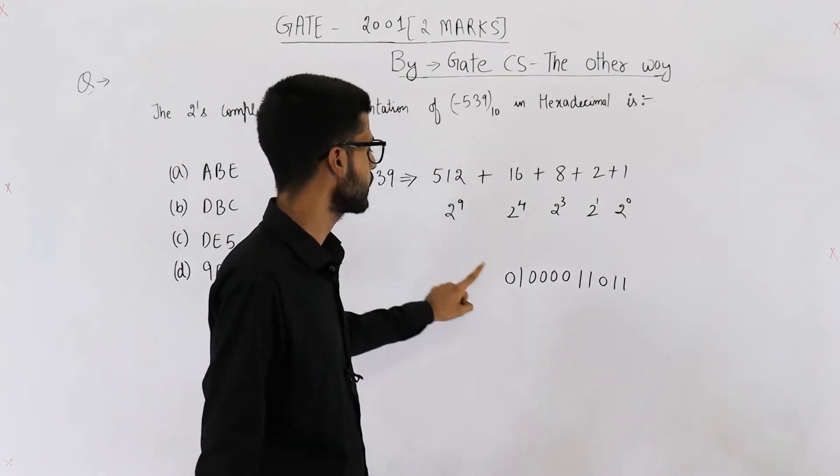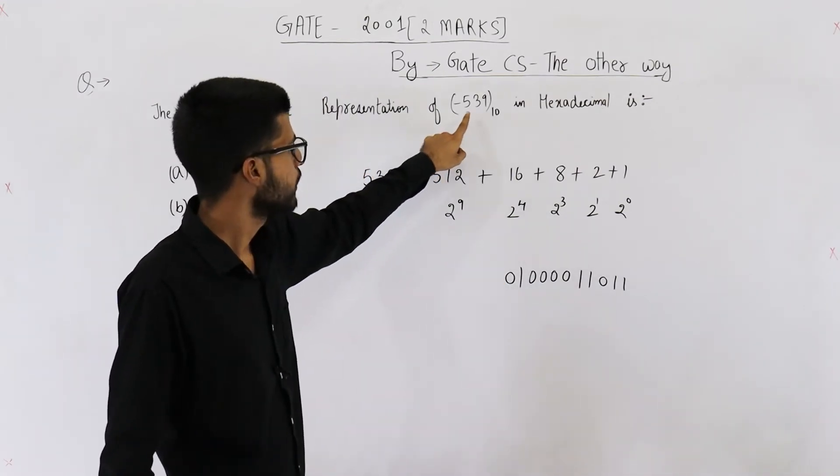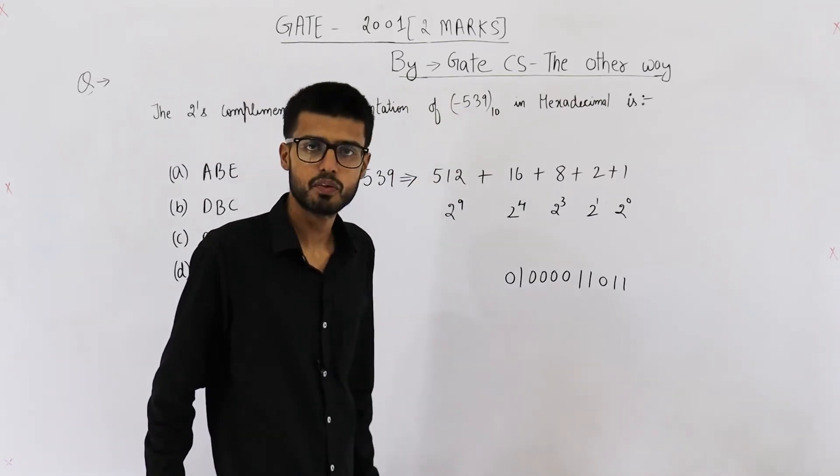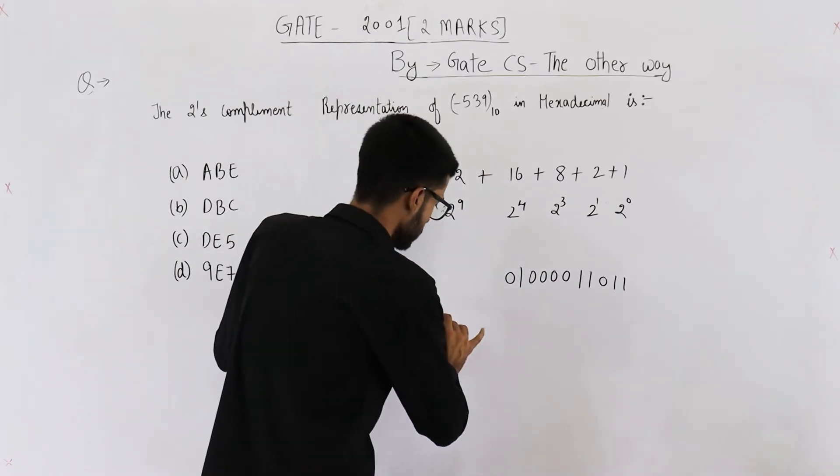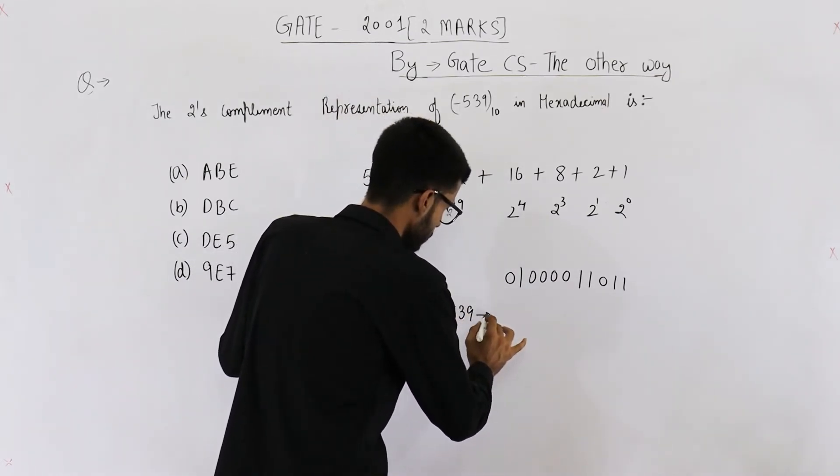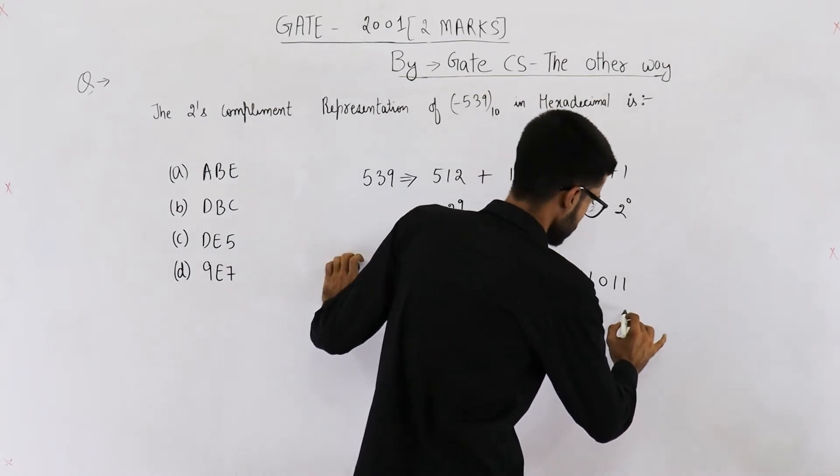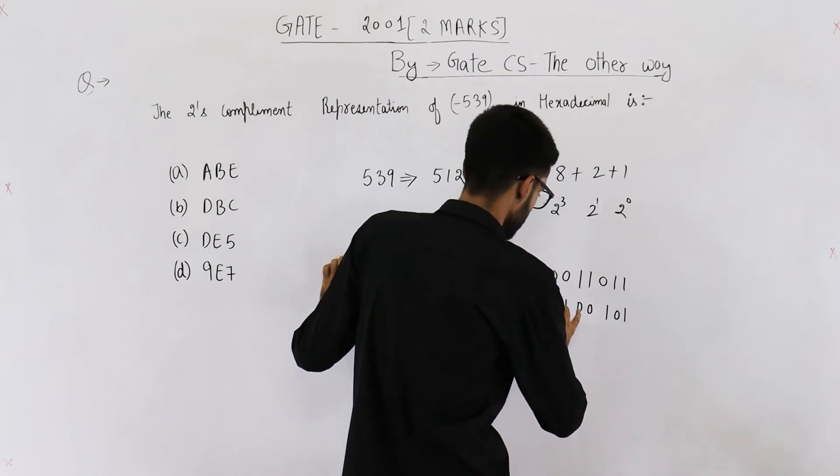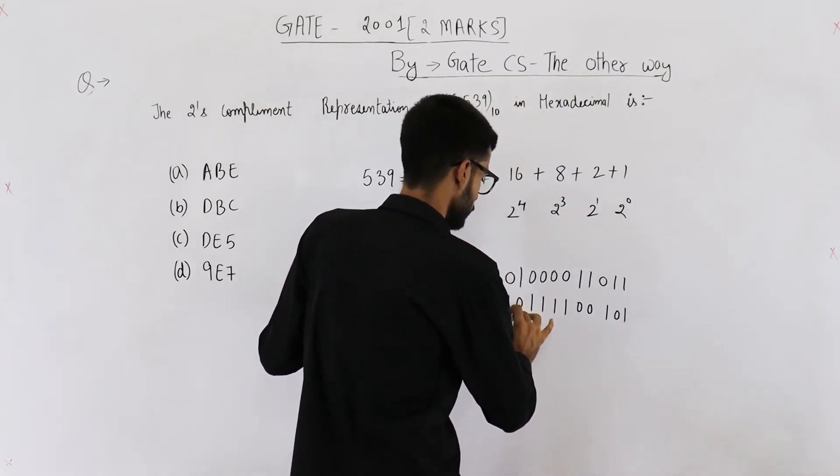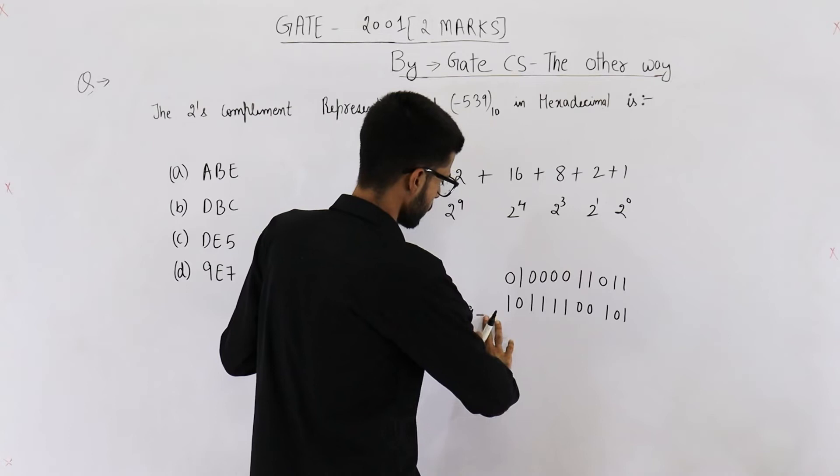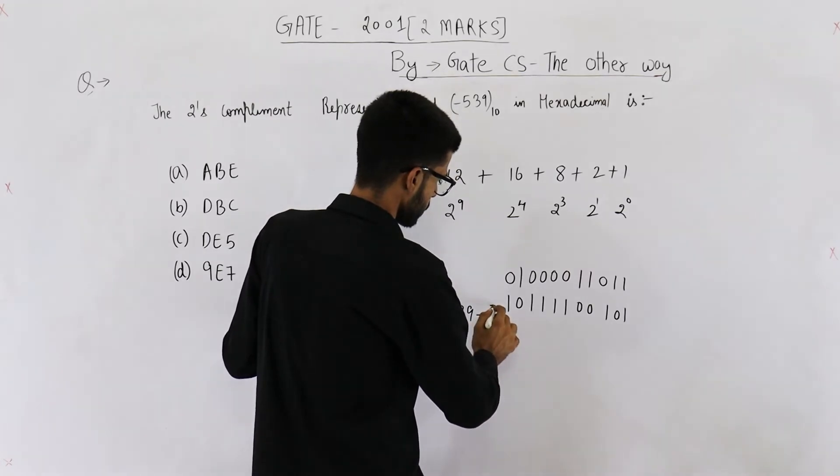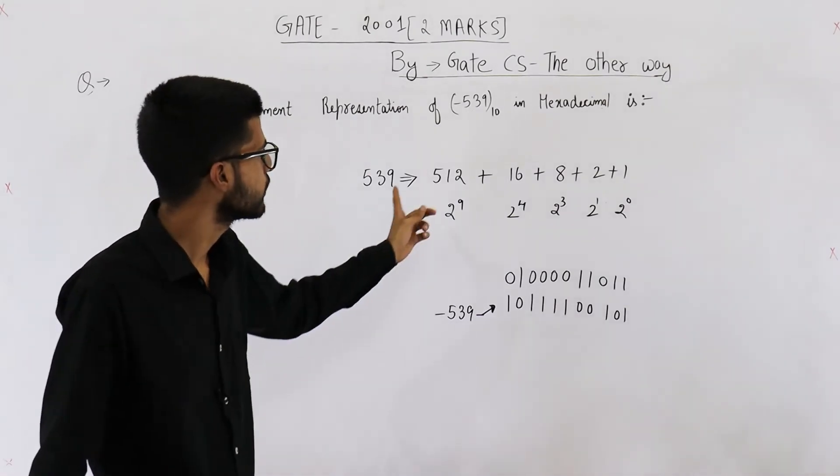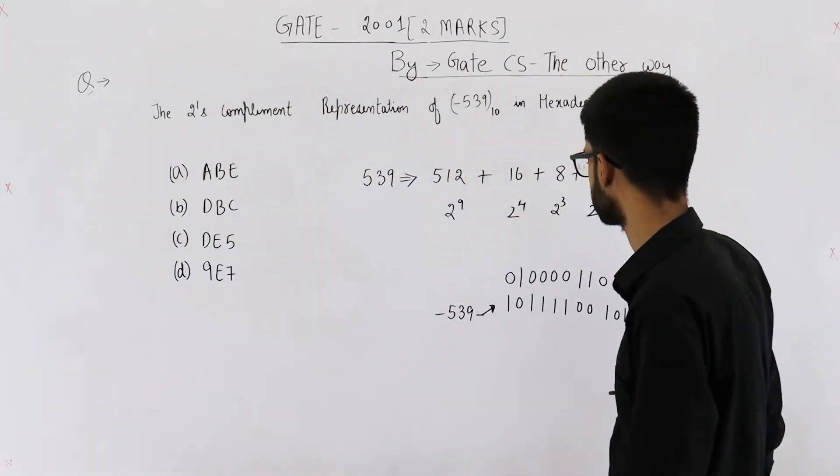Now 539 is represented like this. To find out the representation of minus 539, we just need to take 2's complement of this number. So minus 539 will be 1010011111101. So this is how we represent minus 539 in two's complement number system.